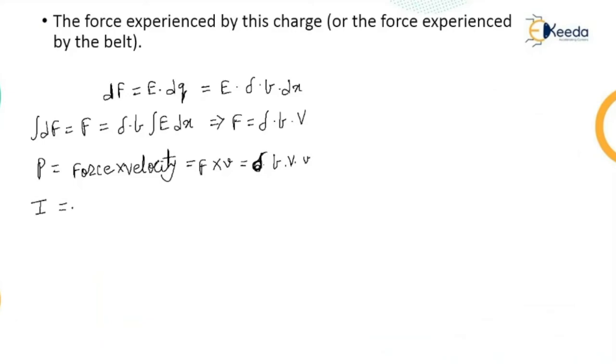We know the basic equation of current which is DQ by DT. DQ by DT is equal to sigma B into DX by DT. That is the value of DQ. So it is equal to sigma B into small velocity v. This sigma B into small v can give us the power required to move the belt.